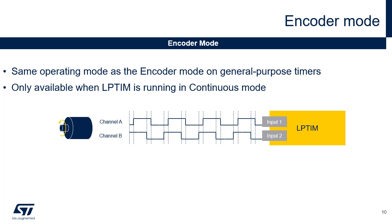The low-power timer features an encoder mode function that can interface with incremental quadrature encoder sensors using the peripheral's input 1 and input 2. This mode handles signals from quadrature encoders used to detect the angular position of rotary elements. Encoder interface mode acts as an external clock with direction selection; the counter counts continuously between zero and the auto reload value in the LPTIM_ARR register. A clock signal is generated from the two external input signals, and the phase between them determines the counting direction. Both inputs feature glitch filtering circuitry. In order to use the encoder mode, the low-power timer must be running in continuous mode.